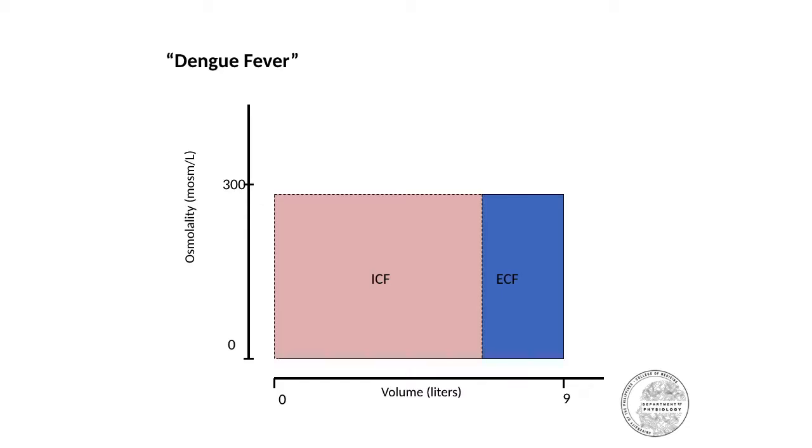Dengue fever is an example of isotonic plasma volume loss, such that if you lose a lot of fluid, it is only the ECF that is affected.